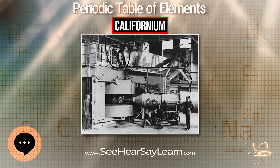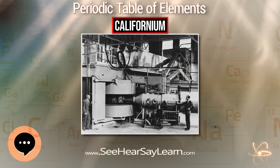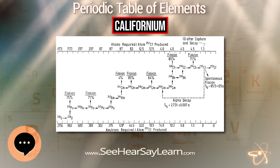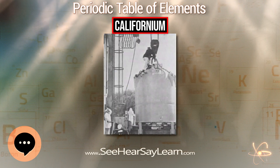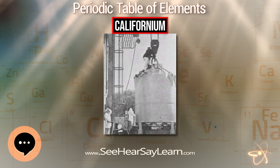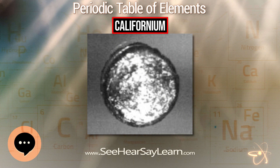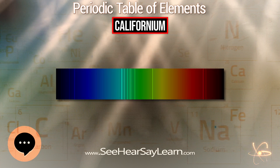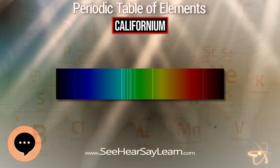The most stable of californium's 20 known isotopes is californium-251, which has a half-life of 898 years. This short half-life means the element is not found in significant quantities in the Earth's crust. Californium-252, with a half-life of about 2.645 years, is the most common isotope used and is produced at the Oak Ridge National Laboratory in the United States and the Research Institute of Atomic Reactors in Russia.